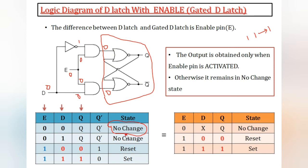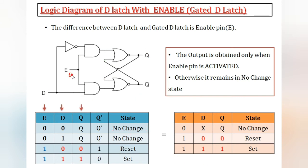Next, enable = 0 and D = 1. One is here, inverted gives zero. Zero and zero to AND gate results zero; zero and one to AND gate results zero. So SR latch inputs are 0, 0 — no change condition. If enable is 0, regardless of whether D is 0 or 1, the output remains the same as previous output — that is no-change condition.